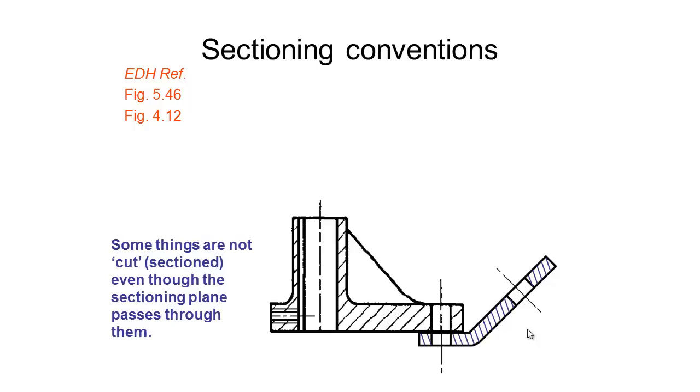The next thing is some things are not cut even though the sectioning plane passes through them. If an object is more familiar or understandable when it's not cut, we just don't cut it. An example of that would be a bolt going through this hole here. It is a lot clearer if we do not cut the bolt and this is shown in figure 5.64 in the handbook.